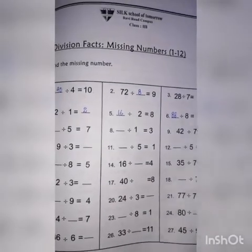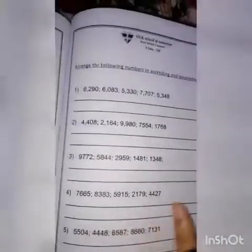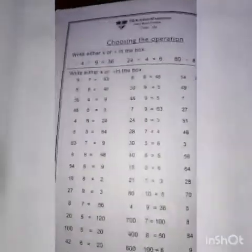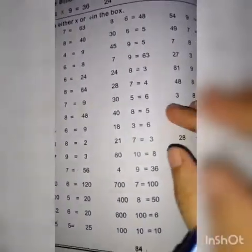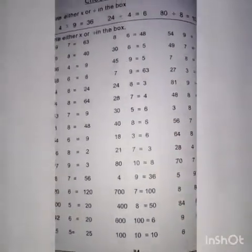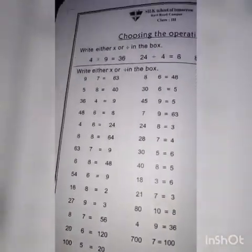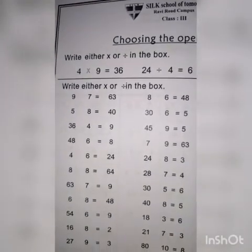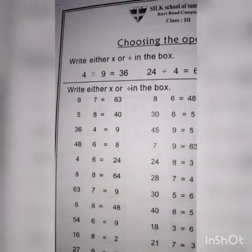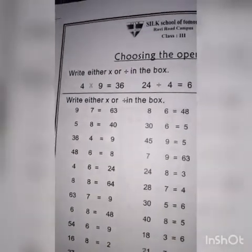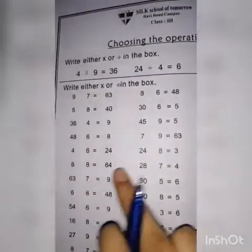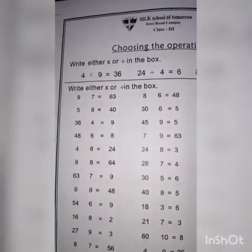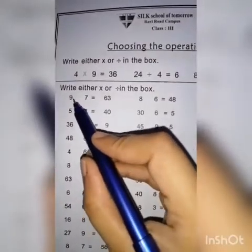ٹھیک ہے، سمجھ آ گئی؟ اب آپ نے کرنا ہے اپنا next page — next page ہے آپ کا 84۔ 84 میں کیا کرنا ہے: 'Write either multiply or divide in the box.' اب آپ نے بتانا ہے کہ یہ جتنے بھی boxes خالی نظر آ رہے ہیں ان میں multiply کا sign آئے گا یا divide کا۔